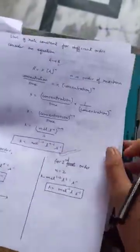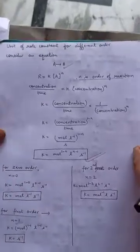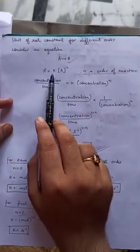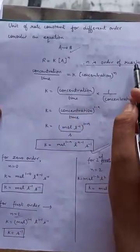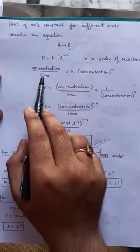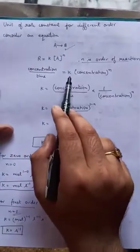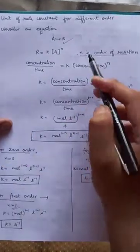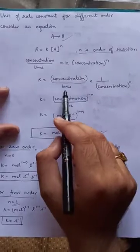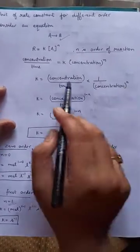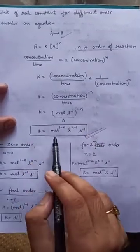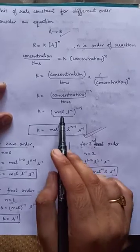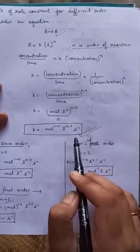Now we will calculate the unit of rate constant for different orders. Let us consider equation A to B. Rate equals K A to the power N where N is order of reaction. R has a unit concentration upon time. A has a unit concentration. We have to calculate the unit of K where N is order. K equals concentration upon time, 1 upon concentration to the power N. On solving the equation, K will be equal to mole to the power 1 minus N, liter to the power N minus 1, and second inverse.